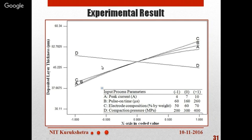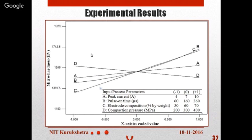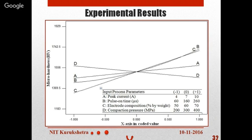With increasing compaction pressure, the bonding of the green compact tool increases, reducing the chances of metal coming out of the tool, and thus the deposited layer thickness decreases. Regarding micro hardness, it increases with peak current, pulse on time, and electrode composition, and decreases with compaction pressure — because micro hardness depends on the deposited layer thickness. A thicker deposited layer results in higher hardness.